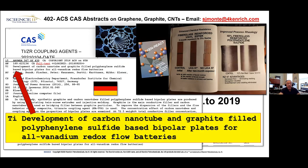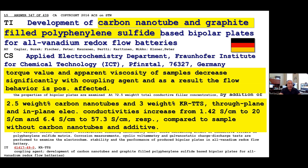One notable abstract was done at the Fraunhofer Institute for Chemical Technology in Germany on the development of carbon nanotube and graphite-filled polyphenylene sulfide-based bipolar plates for all-vanadium redox flow batteries — and batteries are a big deal right now. In our reference manual from 1984, we show a polyphenylene sulfide extrusion in which the aromatic amino zirconate makes the PPS flow much better. Apparently the Fraunhofer researchers tried it with carbon nanotubes and it worked. The abstract states that torque and apparent viscosity of samples decreased significantly with coupling aging, positively affecting flow behavior.